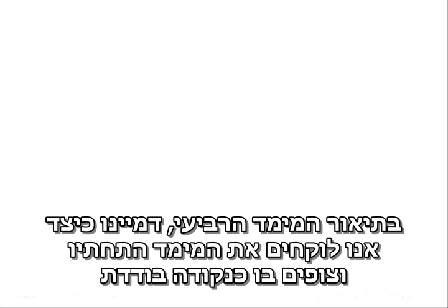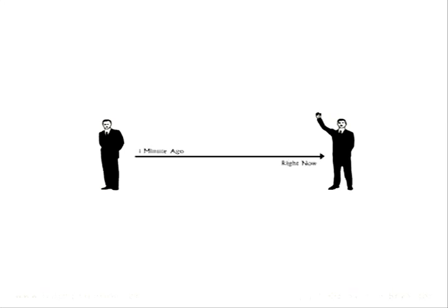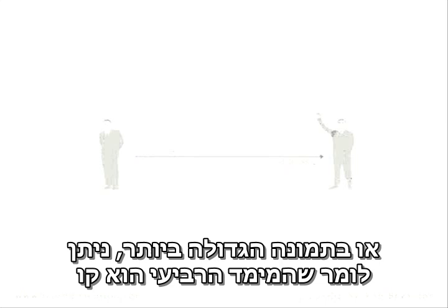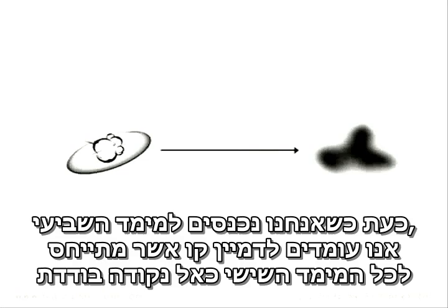In our description of the fourth dimension, we imagine taking the dimension below and conceiving of it as a single point. The fourth dimension is a line which can join the universe as it was one minute ago to the universe as it is right now. In the biggest picture possible, the fourth dimension is a line which joins the Big Bang to one of the possible endings of our universe. Now, as we enter the seventh dimension, we're about to imagine a line which treats the entire sixth dimension as if it were a single point.